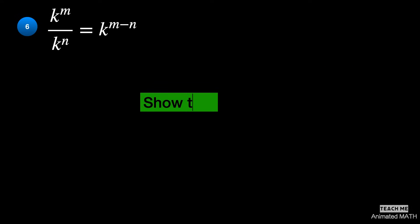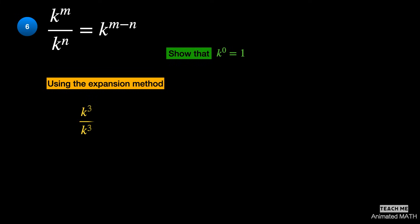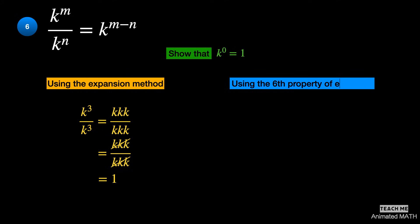This property can also show you why k to the 0th power is equal to 1. For example, solve k cubed over k cubed using the expansion method on the left and the sixth property on the right.